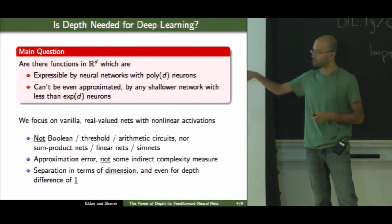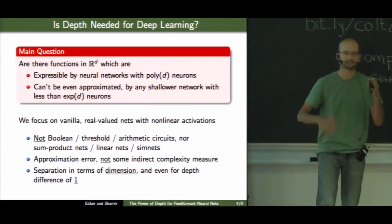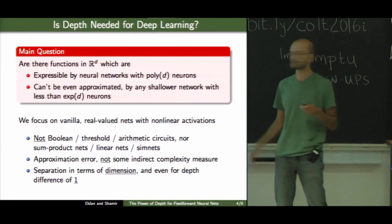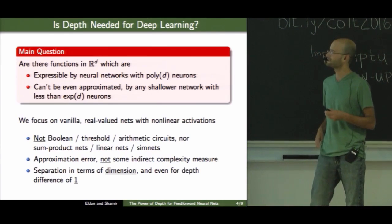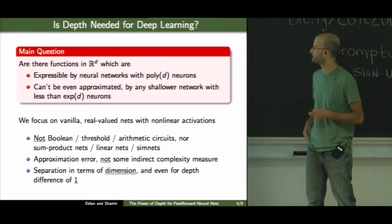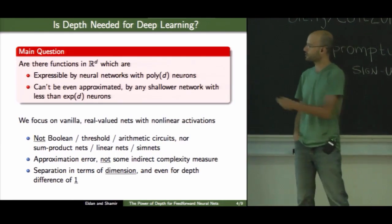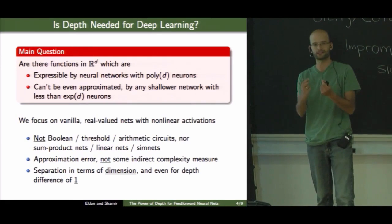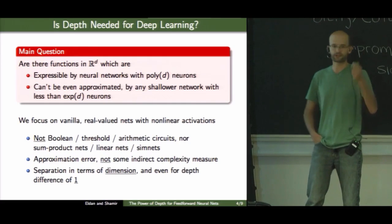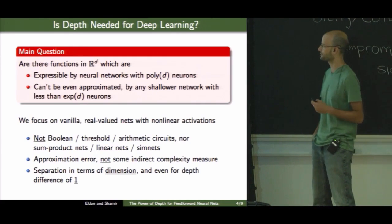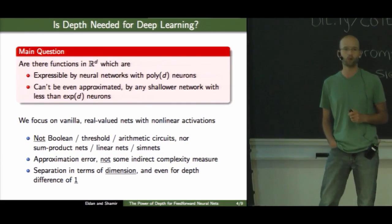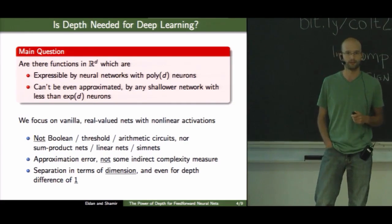Also, we focus directly on approximation error, not in some indirect measure, such as the number of linear regions if the network computes some piecewise linear function. And we focus on separation in terms of dimension, essentially trying to see whether these universal approximation results I talked about earlier are tight. And even if we change the depth just by one, whether we get this kind of separation.